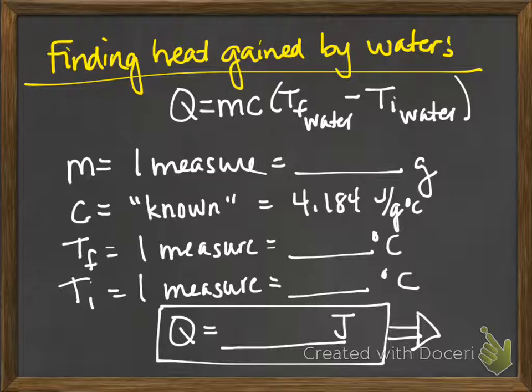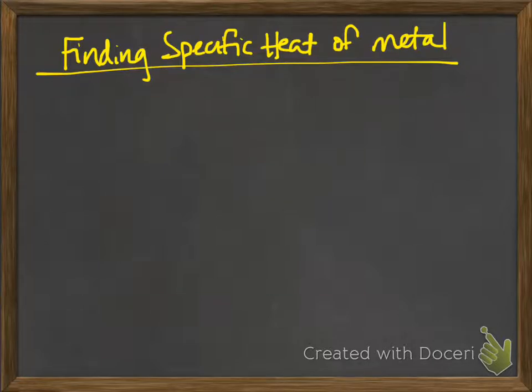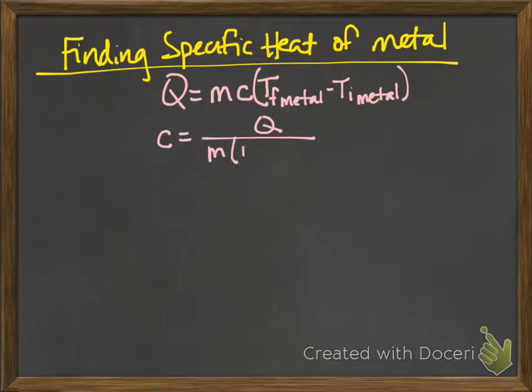Well then, that Q, that heat gained by the water, is equal to the amount of heat lost by the metal. So now I can use that information in another equation to find the specific heat of the metal. So once again, I have the specific heat equation, but this time it's for the metal. And this time I'm going to be solving it for the specific heat. So I've rearranged the equation to solve for C.